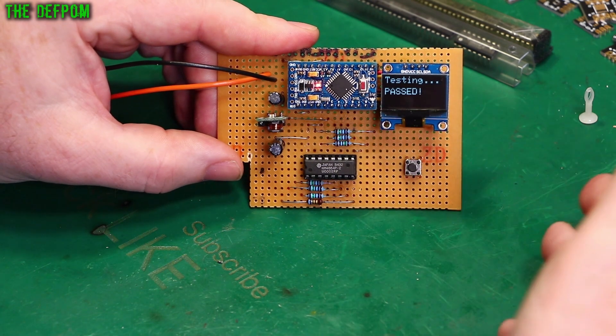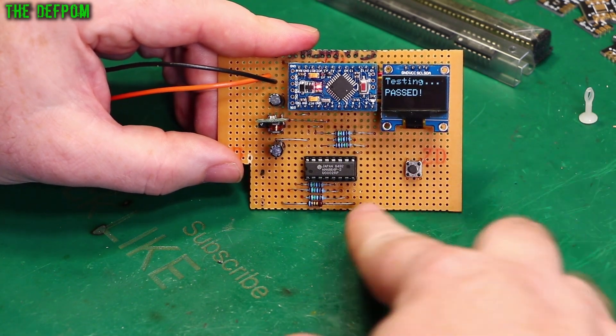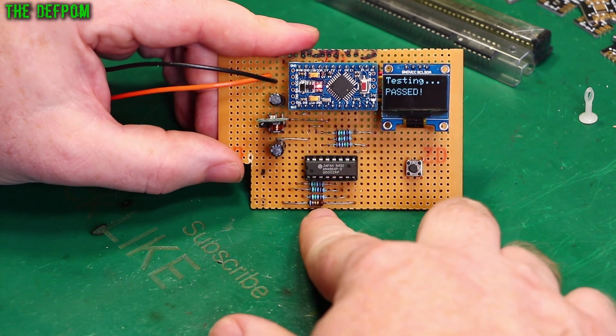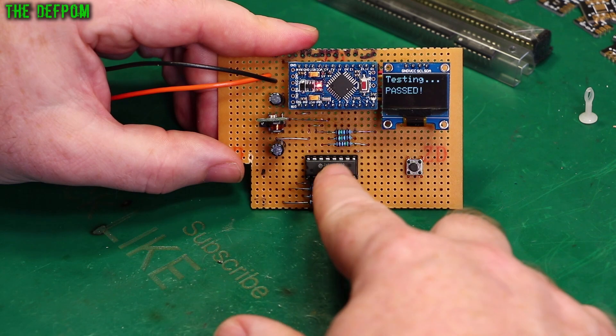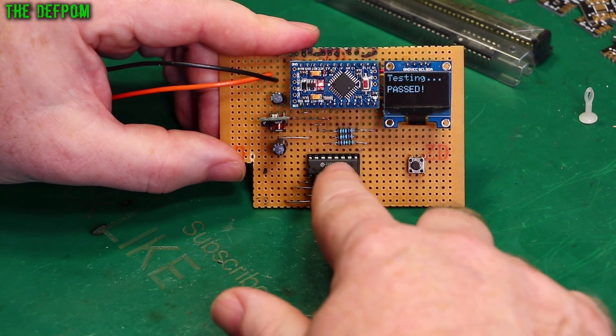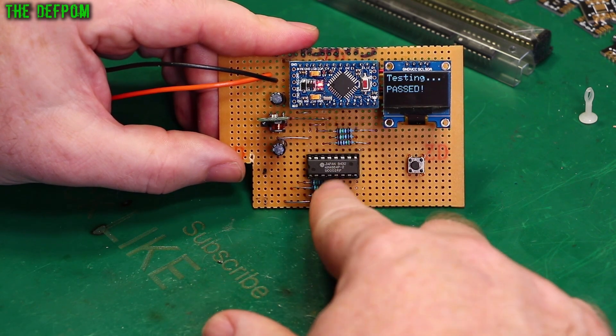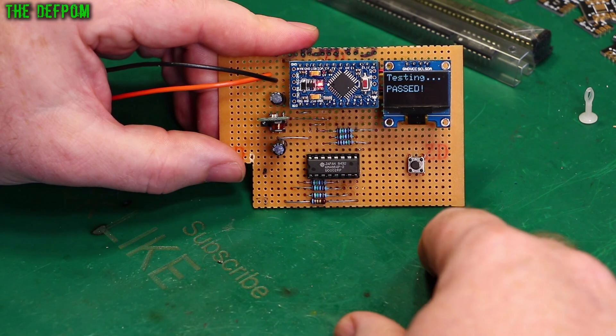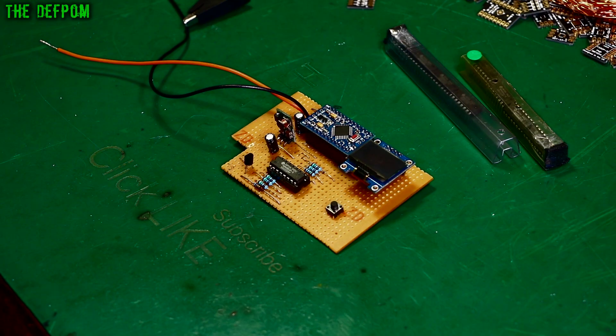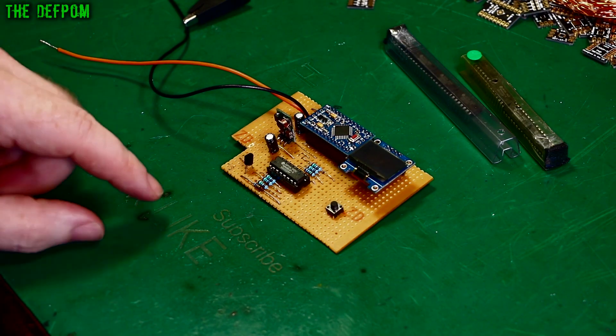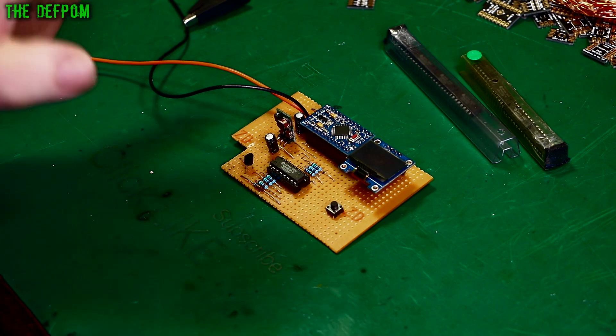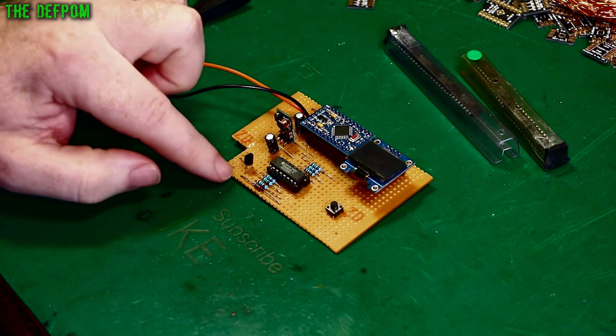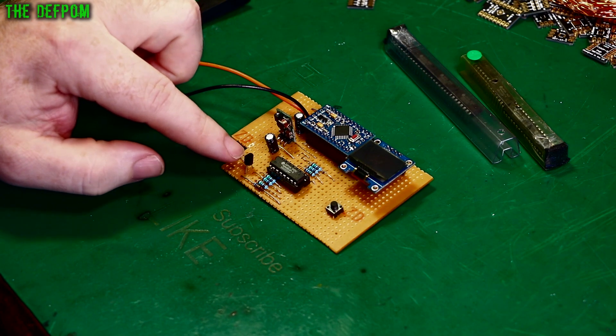Now one thing I haven't implemented which I probably should have done is switching of the power supply for this thing. So right now this is just powered directly off the main rail. There's no switching of the power. Thinking what I maybe should have done is use an output from the Arduino here to switch a PNP transistor or something like that to turn the power on and off to the chip.